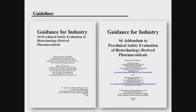The S-6 guideline was issued back in 1997, focusing on the preclinical safety evaluation of biotechnology-derived pharmaceuticals. The scope is narrower than biologics broadly defined. When we talk about biologics, vaccines, recombinant products, or cell therapies, those are biomedical products; however, what this guideline deals with is primarily recombinant products.